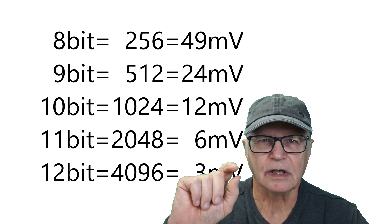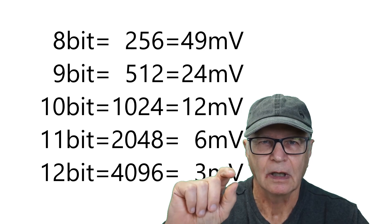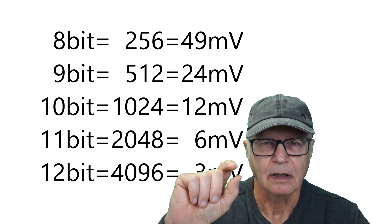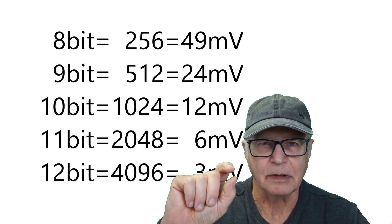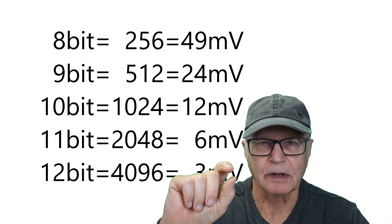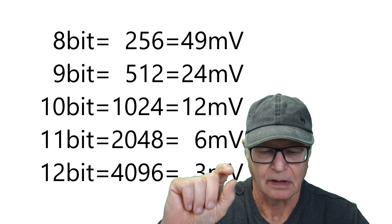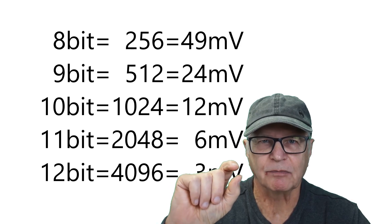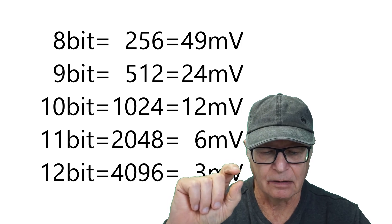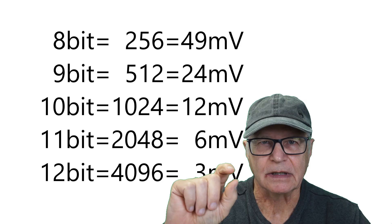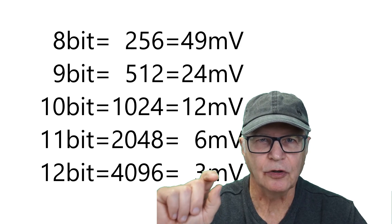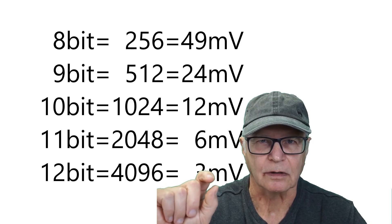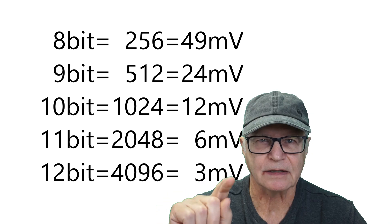With each increase in bit resolution, that discrete step gets smaller. At 9 bits, that becomes 24 millivolts — it's halved. And it gets halved with each bit increase, until at 12 bits it becomes 3 millivolts. Even at 9 bits, that's a huge improvement in resolution.